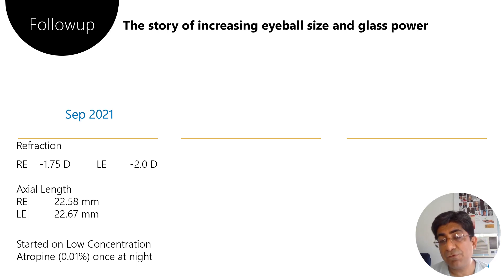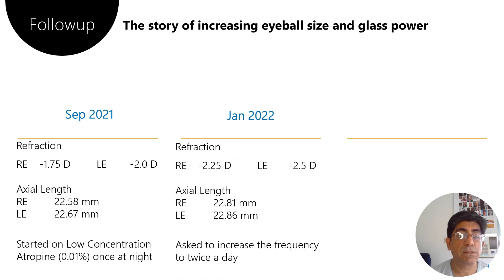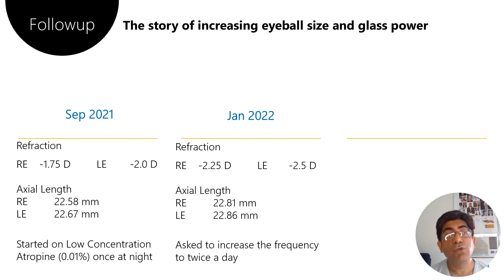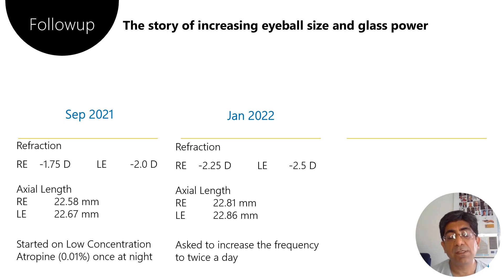The patient followed up in September 2021. Normally, patients with myopia don't come back once you give them glasses because they are happy and can see better. They typically return only when they can no longer see distance or their glasses have broken. This patient came back after six months, and we started them on low concentration atropine because we saw there was axial progression.